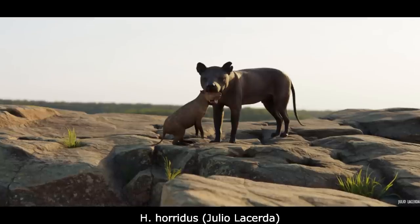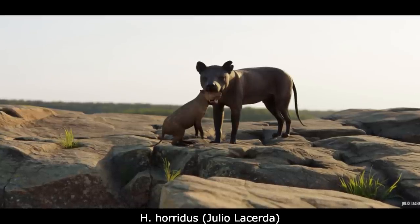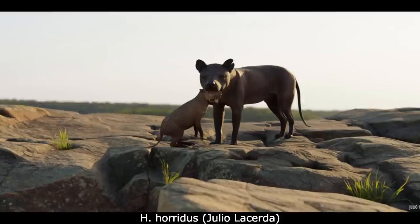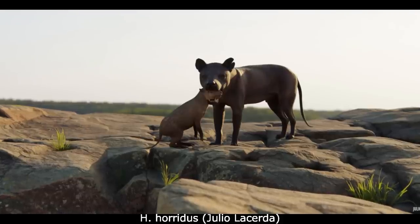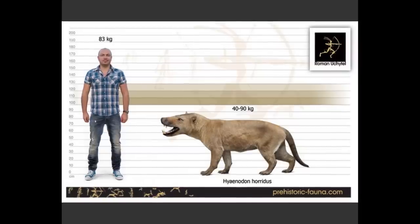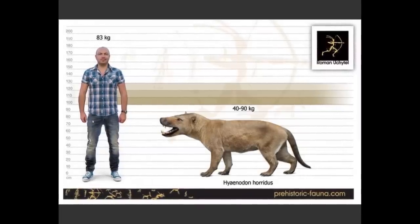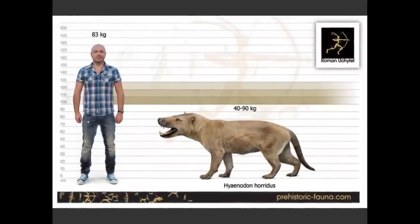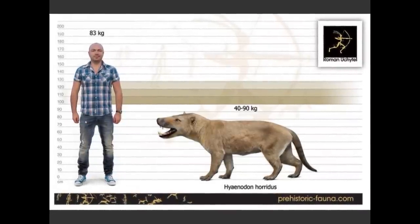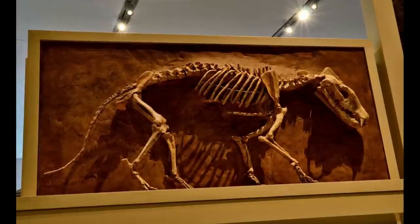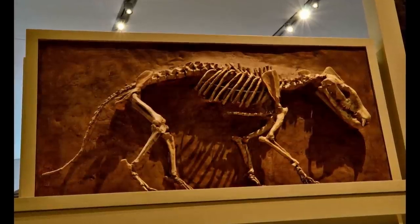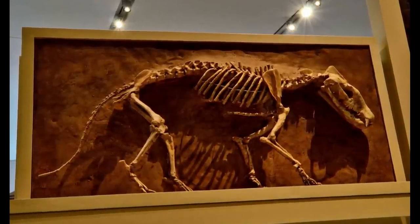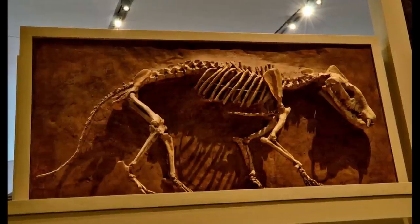The largest known North American species was H. horridus, being about the size of a grey wolf and weighing up to 60 kilograms or 130 pounds. A non-cursorial hunter with plantigrade feet, H. horridus would have been an ambush predator that relied on a strong sense of smell and powerful slicing jaws. Most Hyenodonts possessed skulls that seemed disproportionately large for their body size, being their primary tool for killing prey.